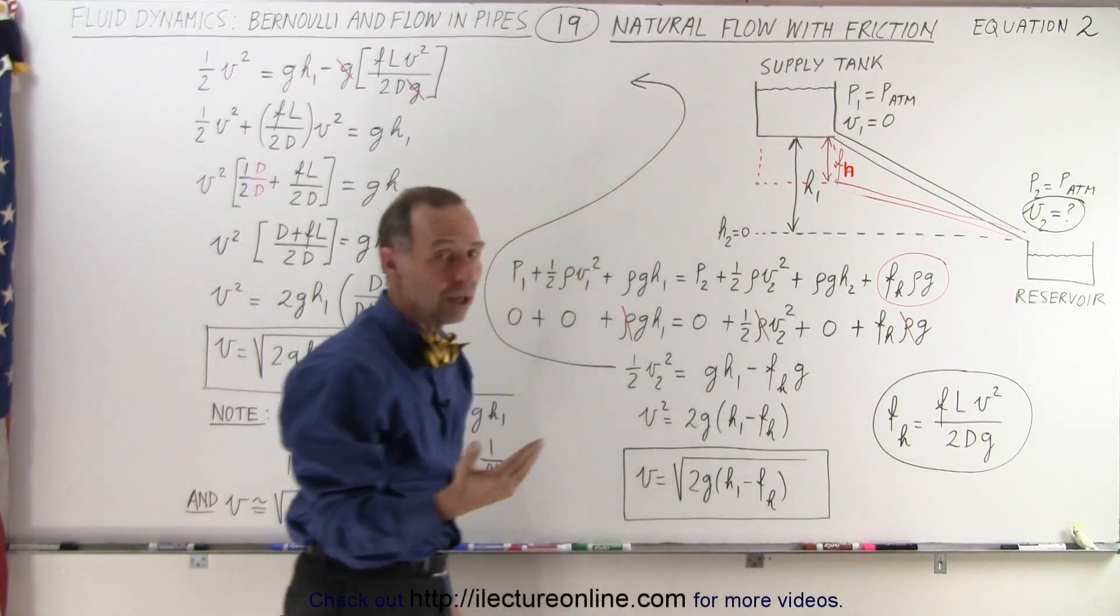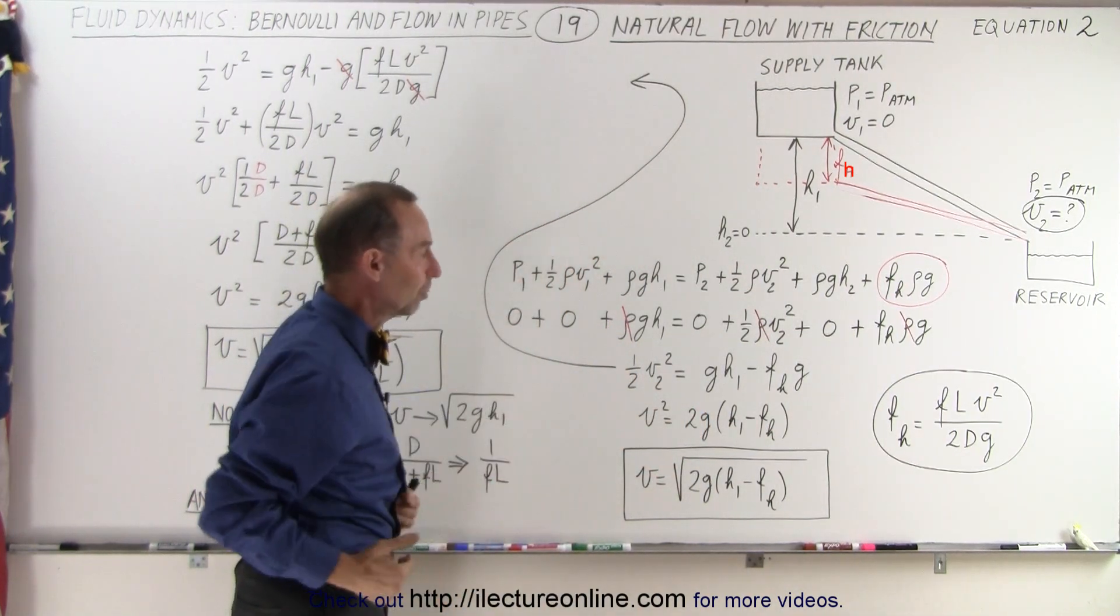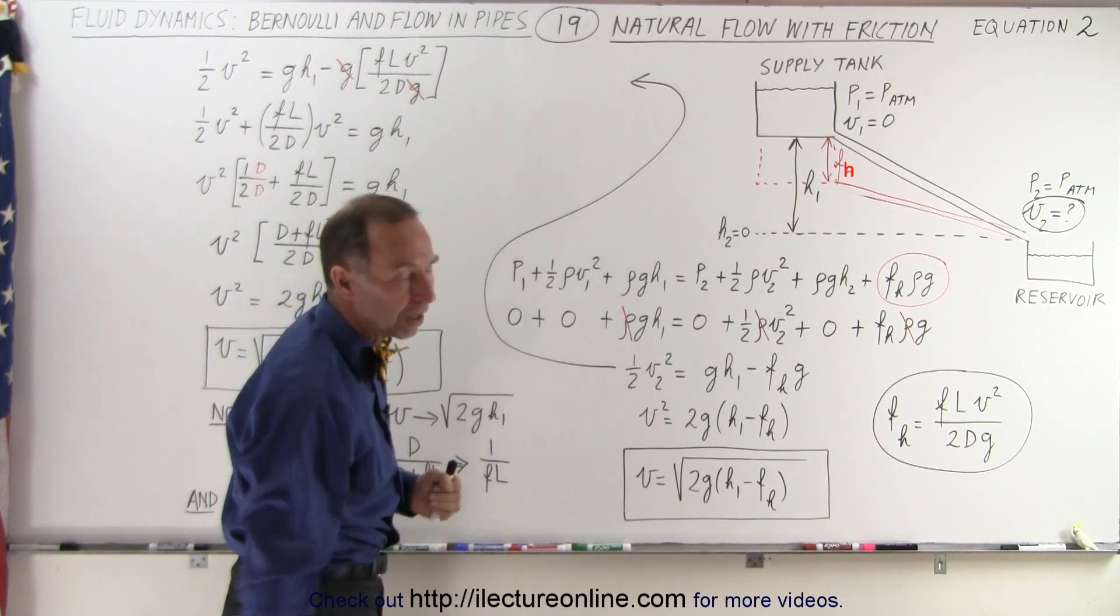Of course, the unit for frictional head loss is in meters, so it would essentially have the effect of lowering the supply tank and therefore have a slower velocity at the end.